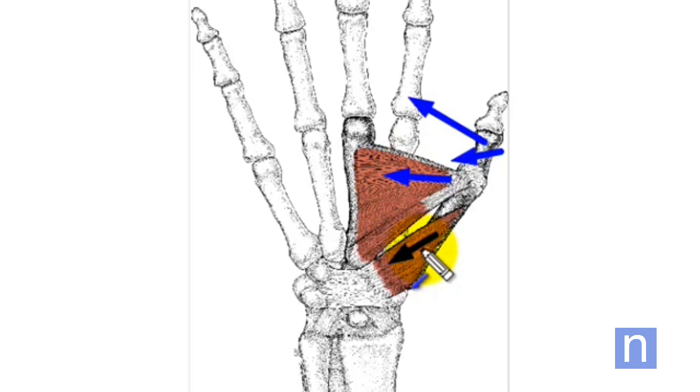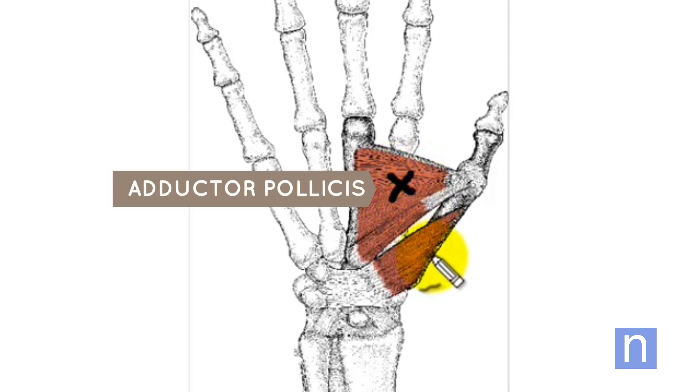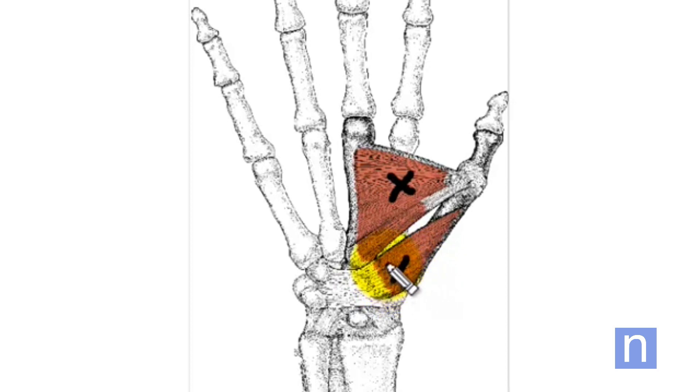There are two trigger points in the thenar eminence. The first is in the middle of the adductor pollicis, and the second is towards the origin of the opponens pollicis. You can see that they're quite separate from each other in the thenar eminence of the thumb.